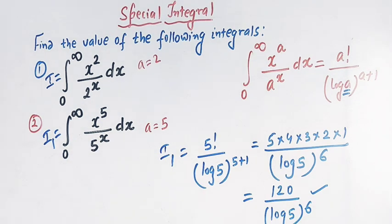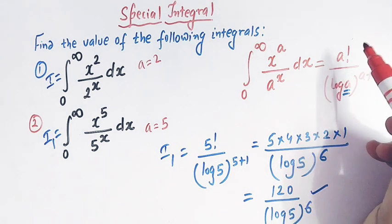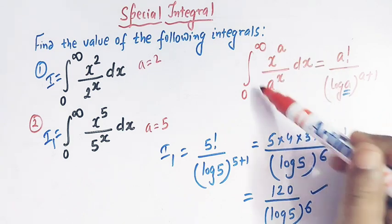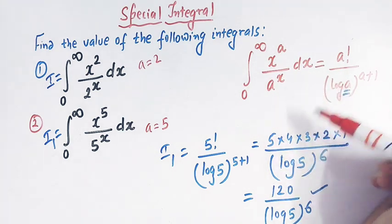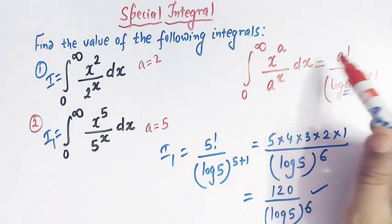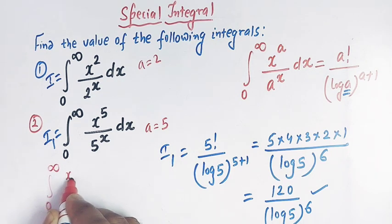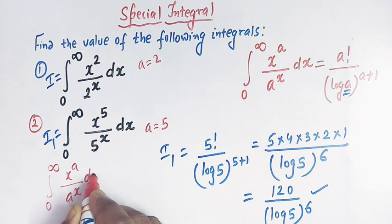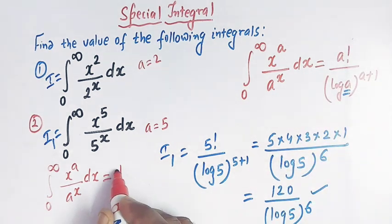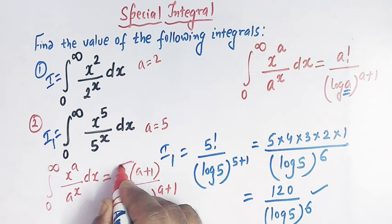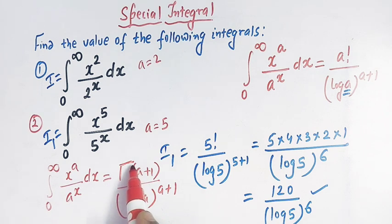Here I would like to mention one important thing: we have used this direct result, but we can also derive this result by making use of the substitution method and the concept of the gamma function. The general integral from 0 to infinity of x raised to a divided by a raised to x dx can also be written as gamma of (a+1) divided by (log a)^(a+1).